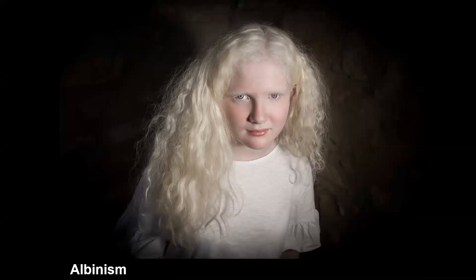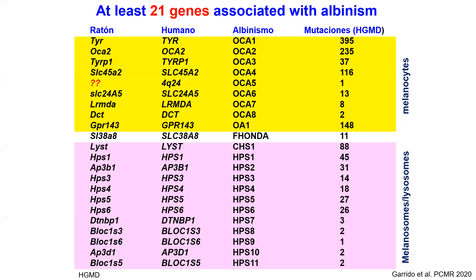Among these 20,000 genes, we have the genes that when they stop working cause the genetic conditions you are all well aware of — albinism. As far as we know currently, and particularly thanks to the efforts of Benoît Arveiler's laboratory in Bordeaux, we have at least 21 genes associated with 22 types of albinism. We have OCA, oculocutaneous albinism types 1 to 8, ocular albinism, FONDA which is a syndromic type, and the proper syndromic types which are CHS — Chédiak-Higashi syndrome — and HPS — Hermansky-Pudlak syndrome types 1 to 11.